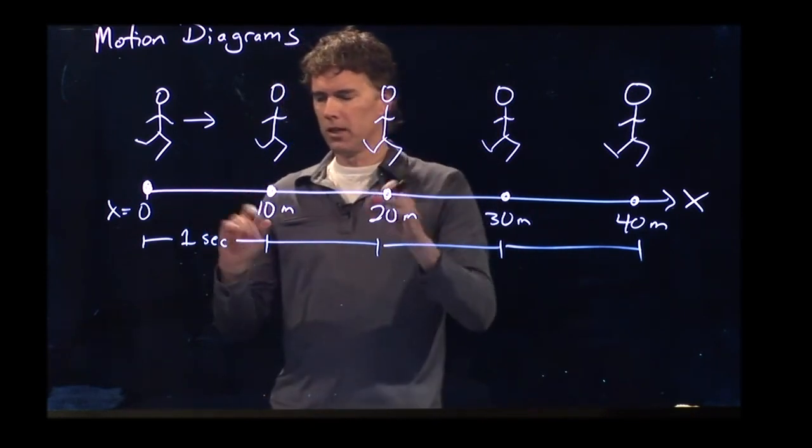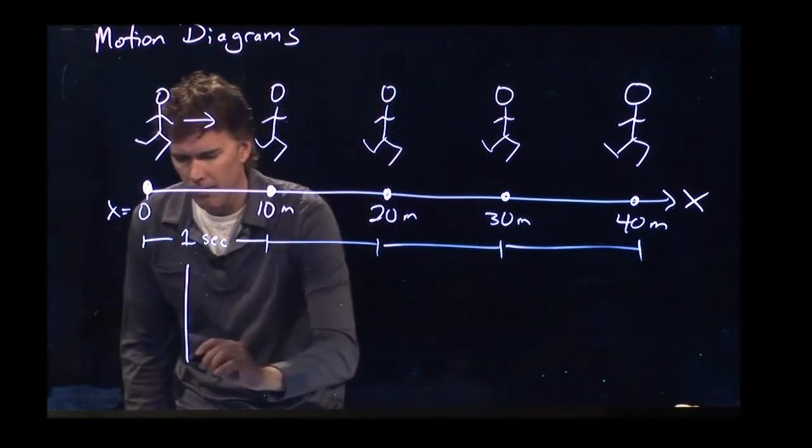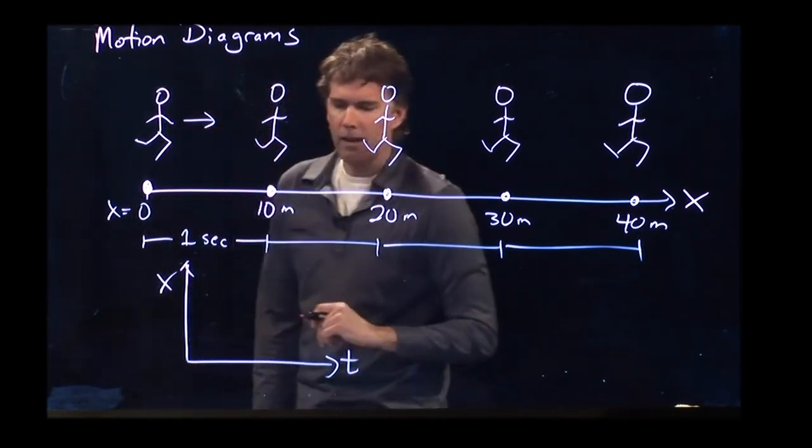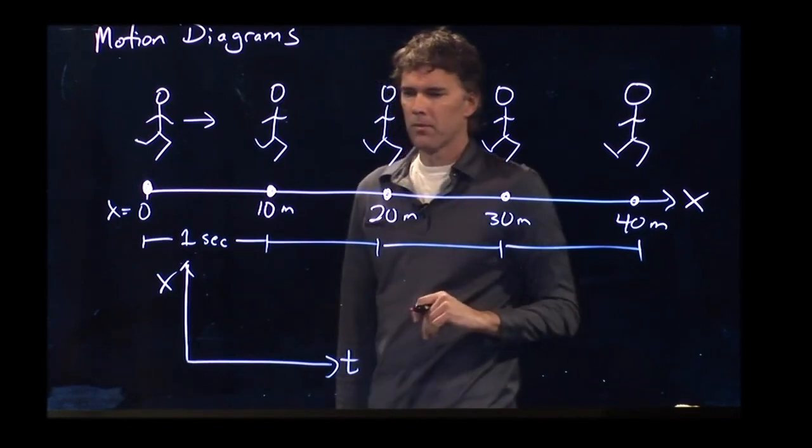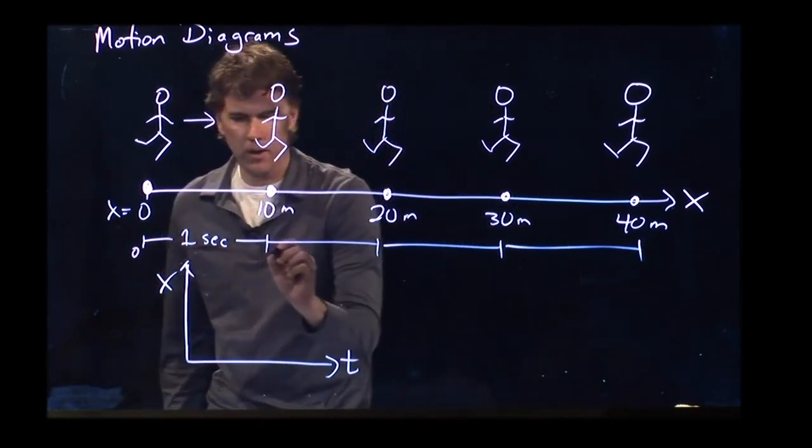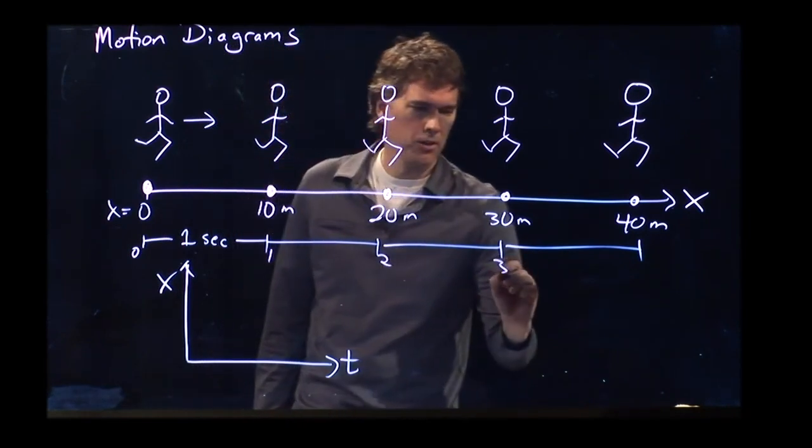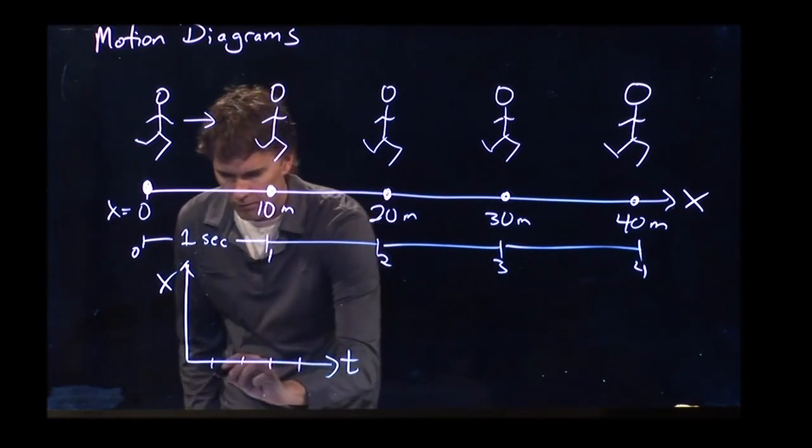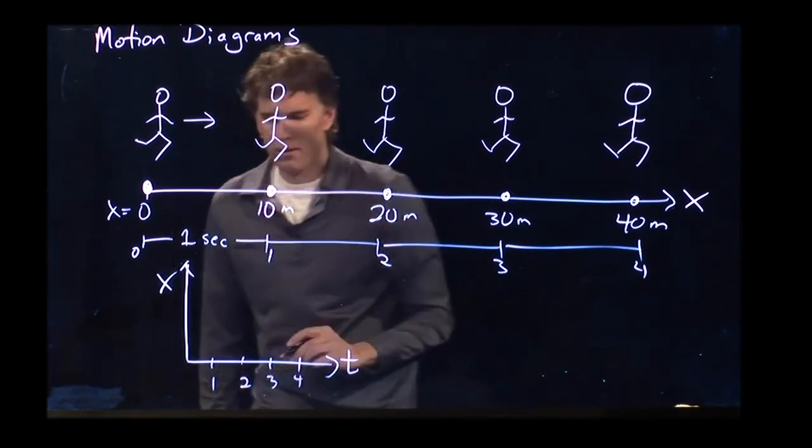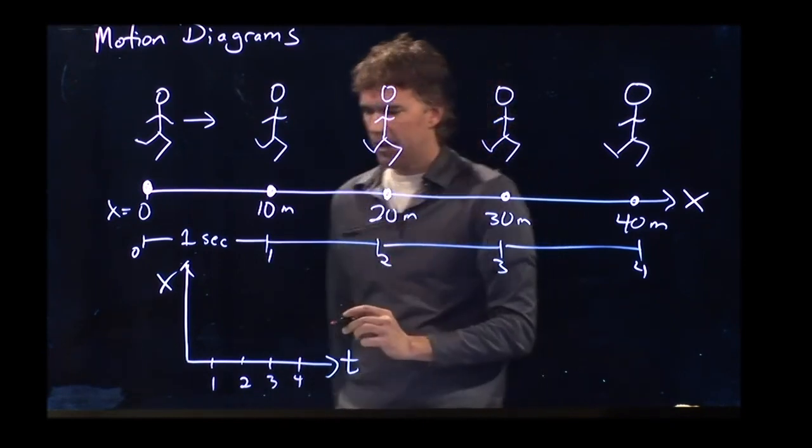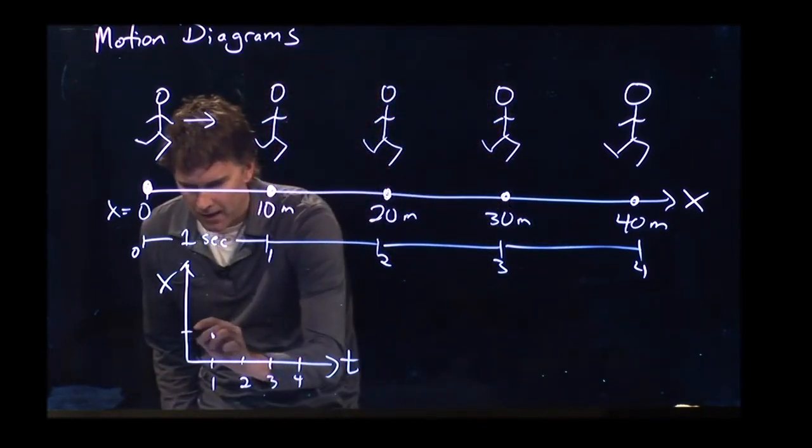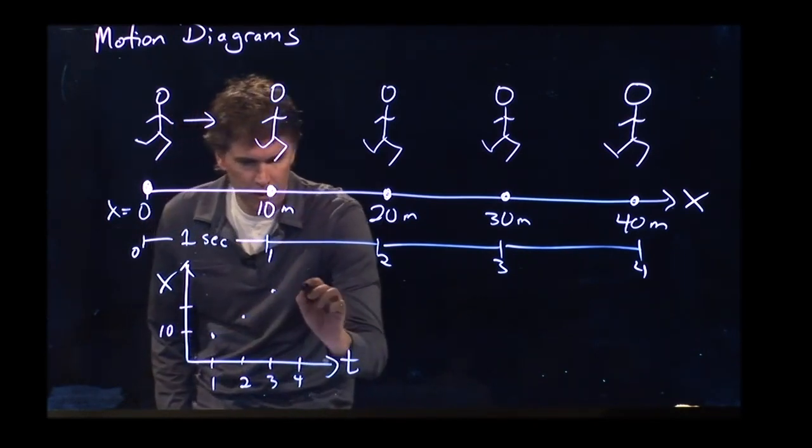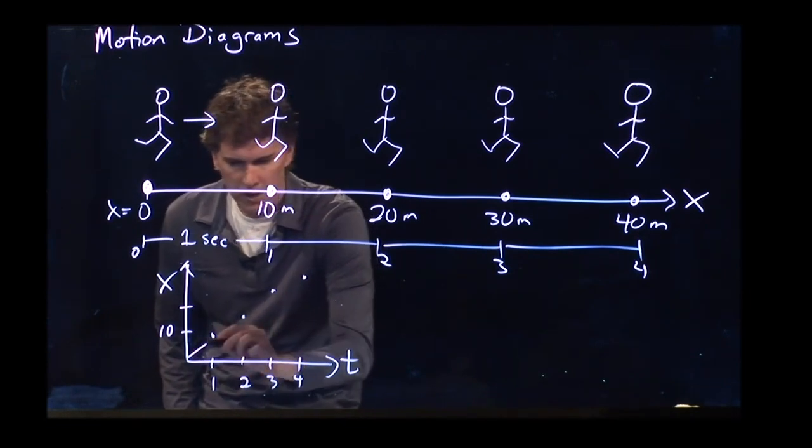How do we make this into a motion diagram? That looks like this. X versus T. Well, we have T. T is 0 and then 1 second and then 2 seconds and then 3 seconds and then 4 seconds. So I need 1, 2, 3, 4 marks right there. And we have the X measurements. So X equals 10, and then X equals 20 and then X equals 30 and then X equals 40.